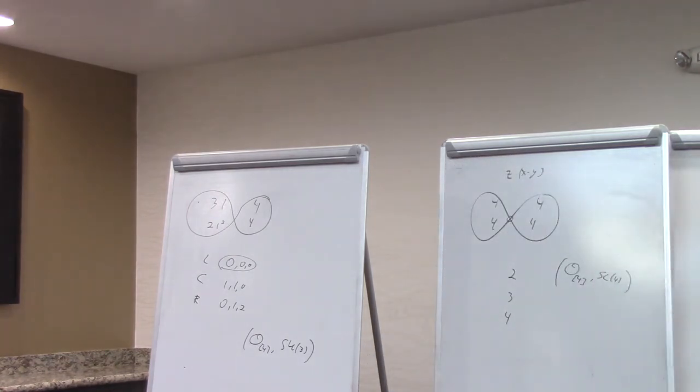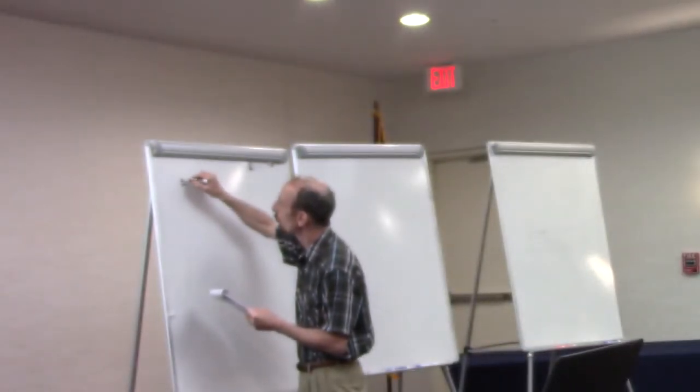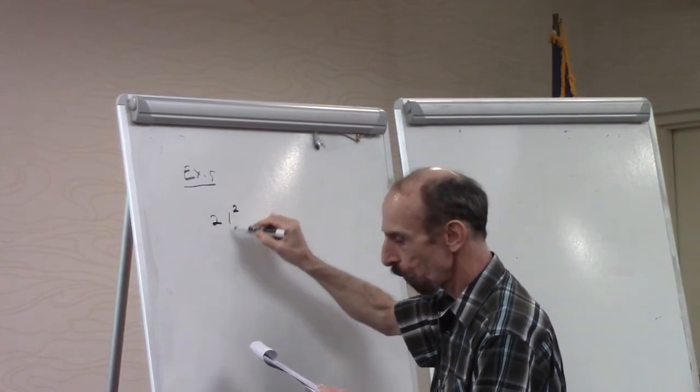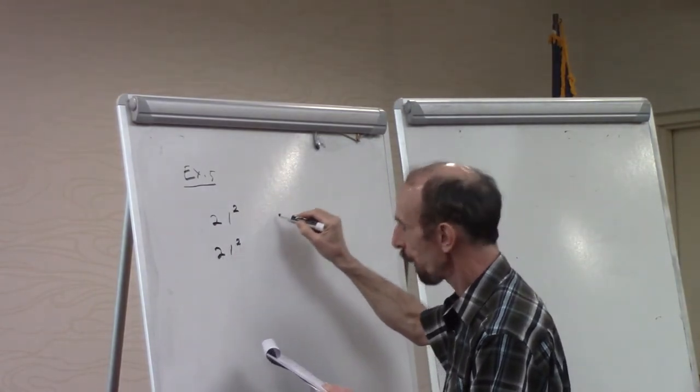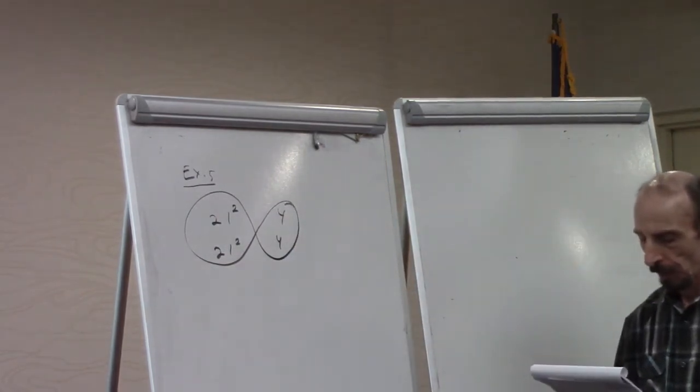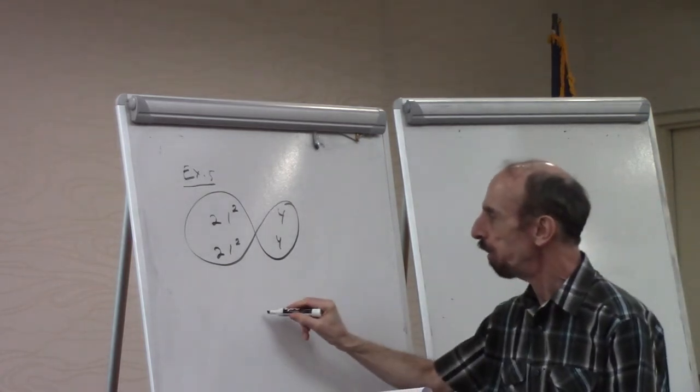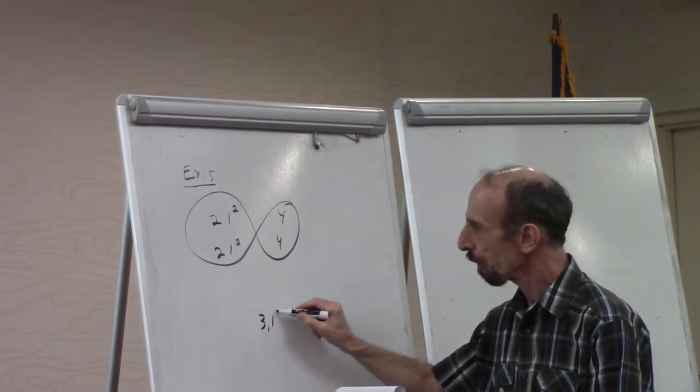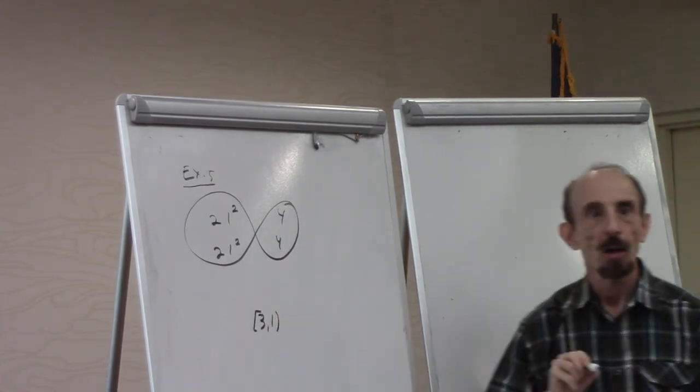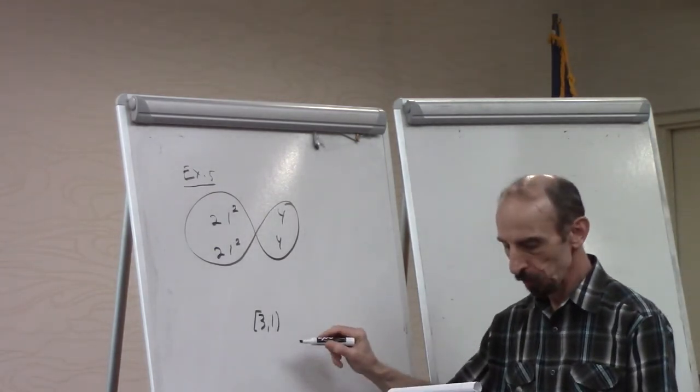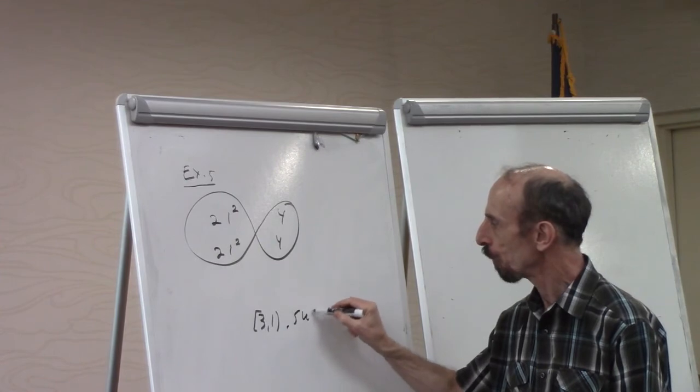You can do very similar examples, and in each of them you can figure out what's the node, what's the group at the node, and what's the nilpotent at the node. Maybe the most entertaining elementary example - I'll skip a few - this is my fifth example. You do (2,1^2), (2,1^2), 4, and 4.